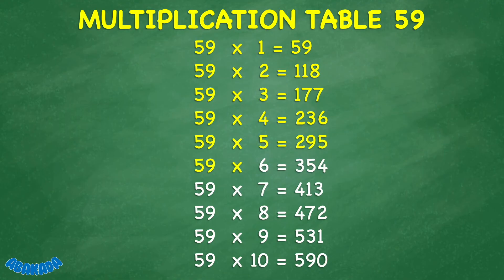59 times 6 equals 354. 59 times 7 equals 413. 59 times 8 equals 472. 59 times 9 equals 531. 59 times 10 equals 590.